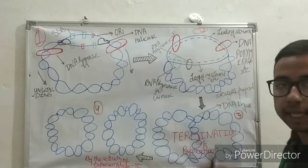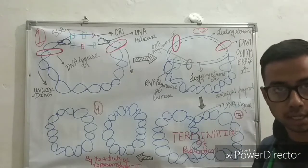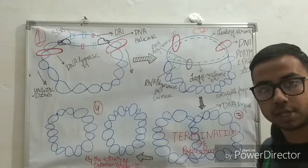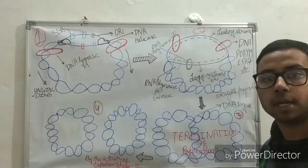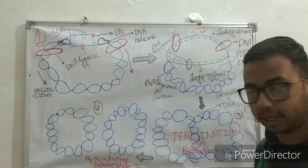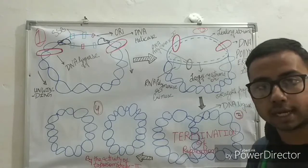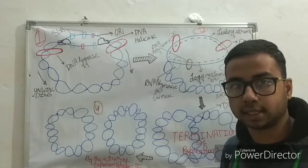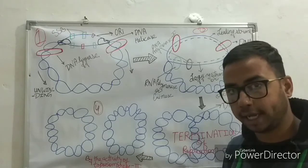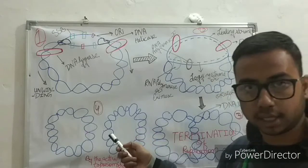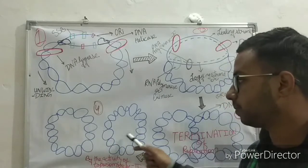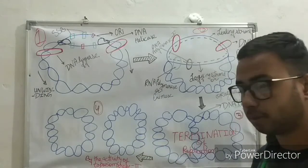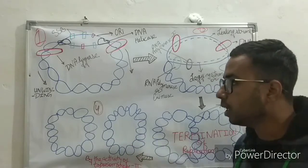After that, DNA ligase joins these strands together and then the termination of replication occurs by the enzyme DNA topoisomerase II. The termination means dividing the two DNAs to form two daughter DNAs in replicated form.